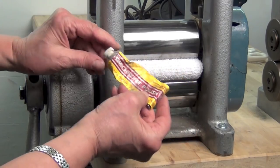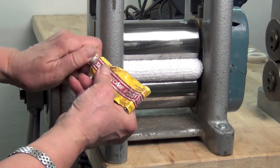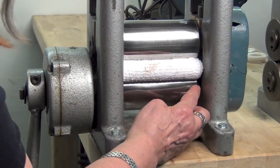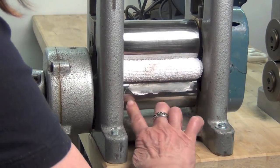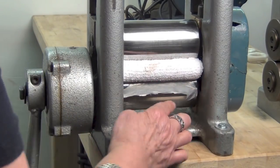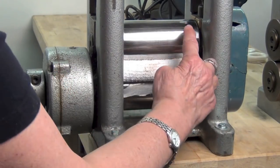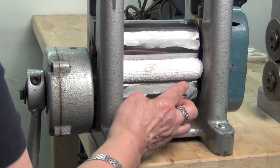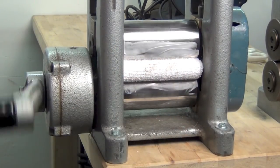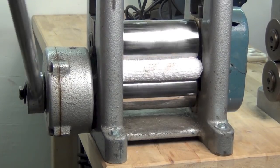I'm using semi-chrome polish. Semi-chrome is a metal polish and cleaning agent. I simply spread some on each of the rollers and then roll it through the mill.